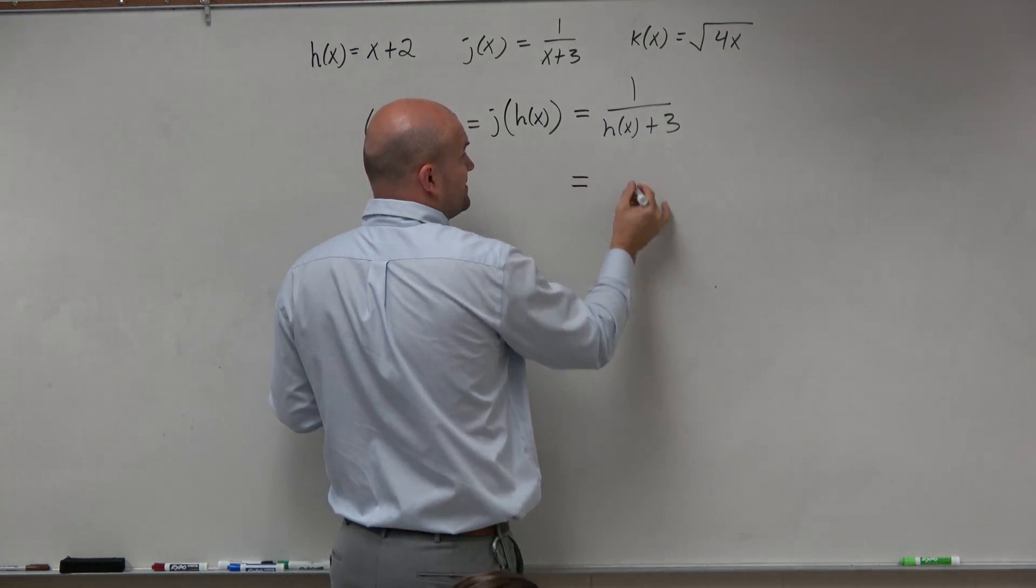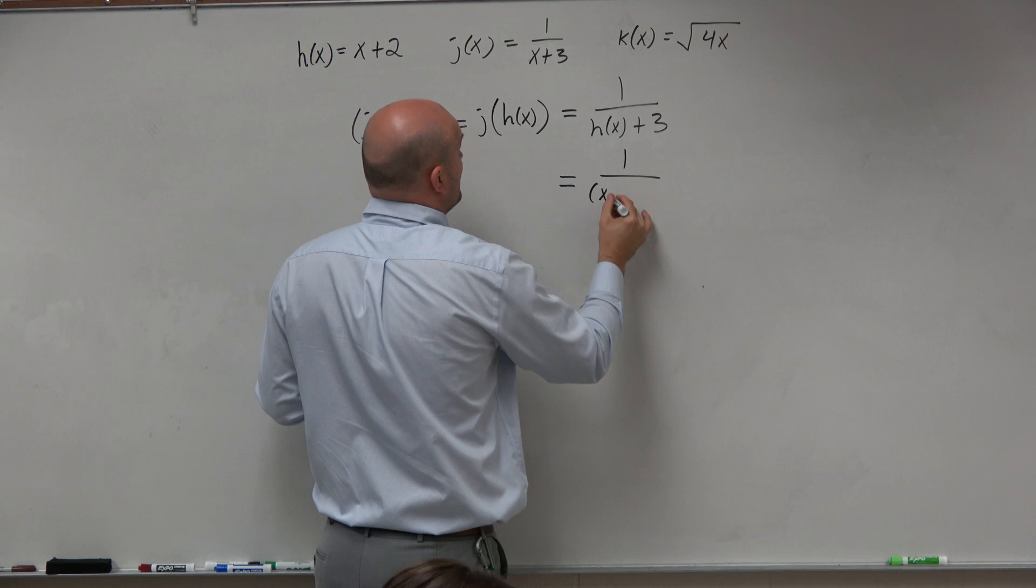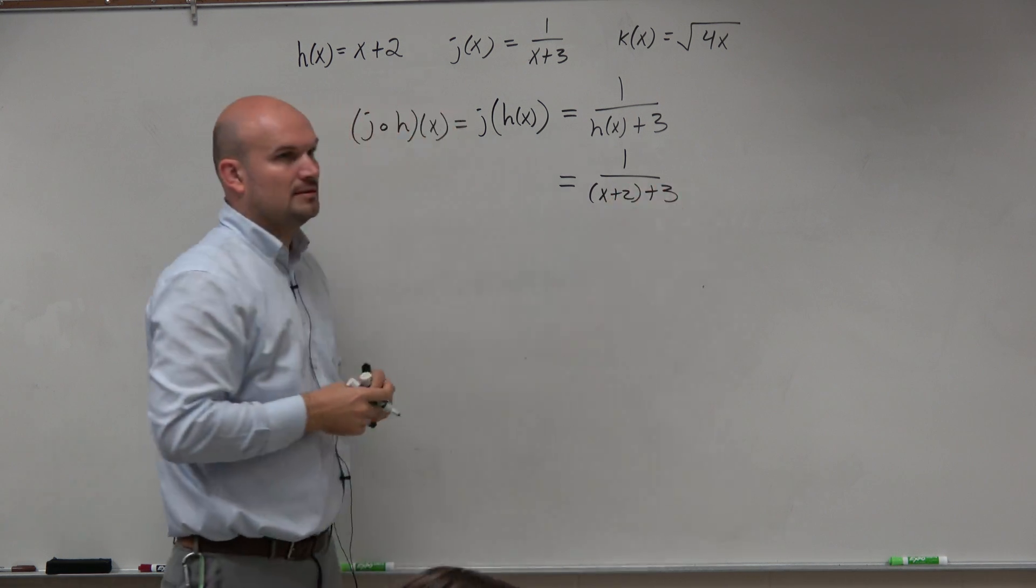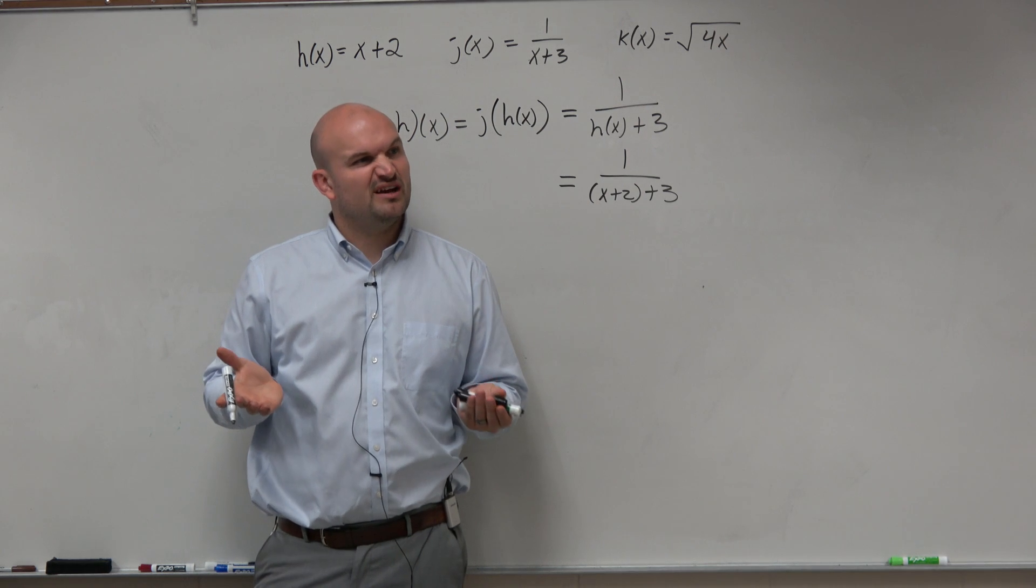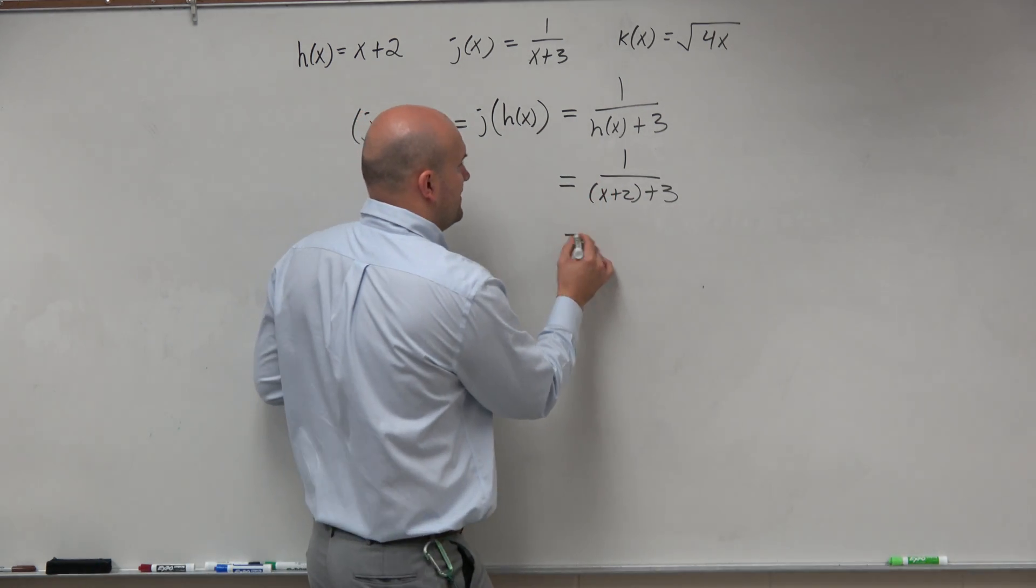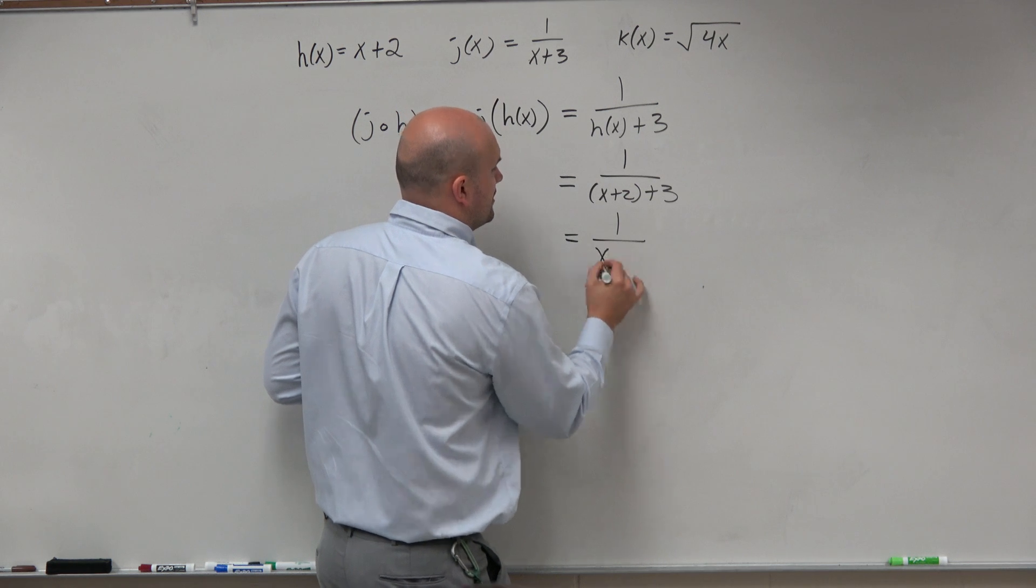So again, using parentheses is going to help you. x plus 2 plus 3. Okay, well I can simplify that. x plus 2 plus 3, I just add the 2 and the 3. That's equal to 1 over x plus 5.